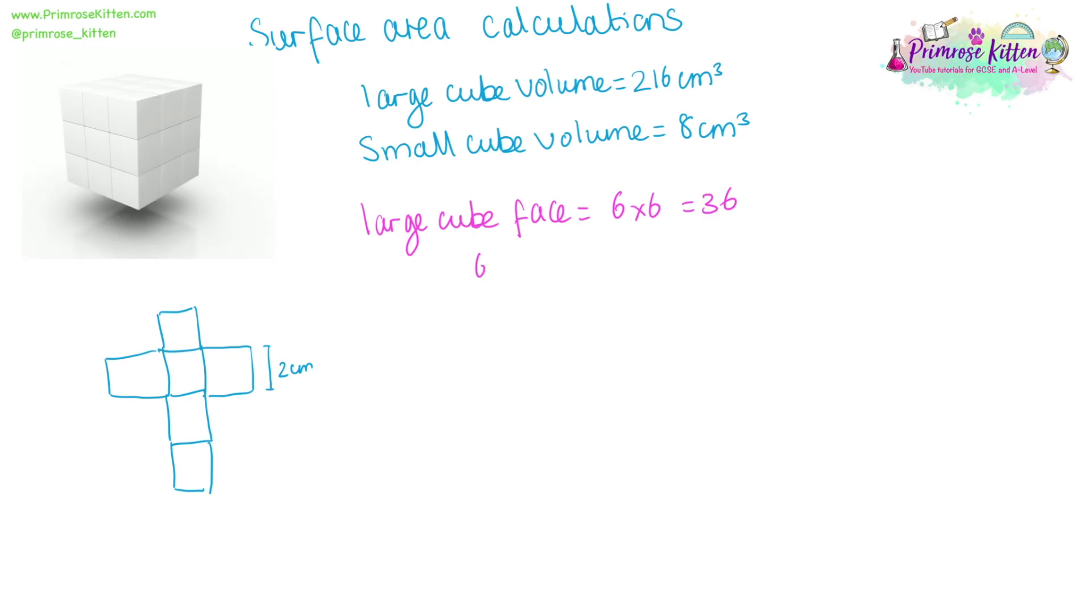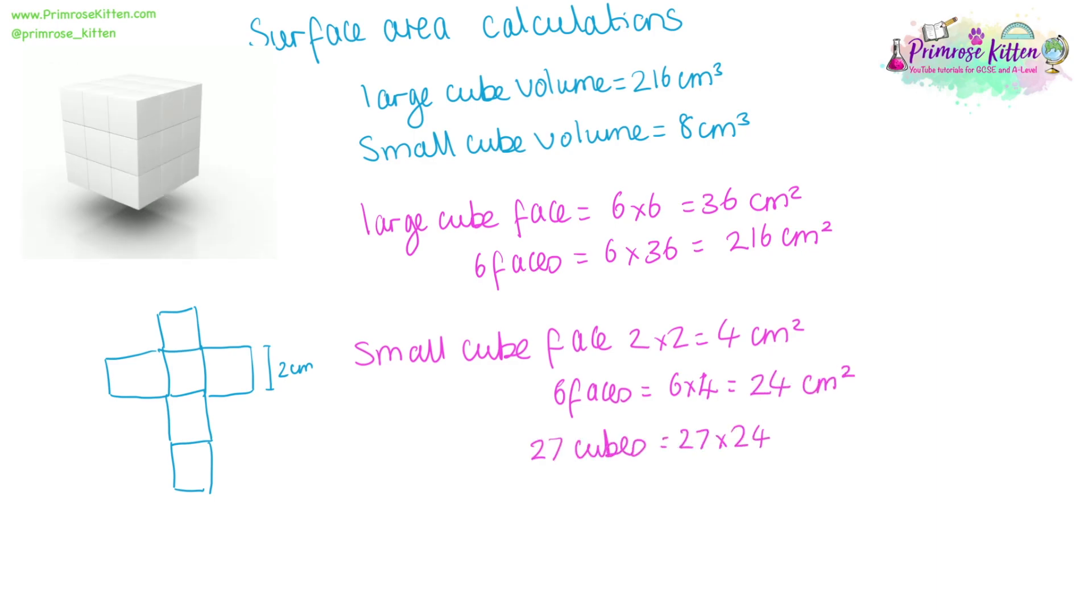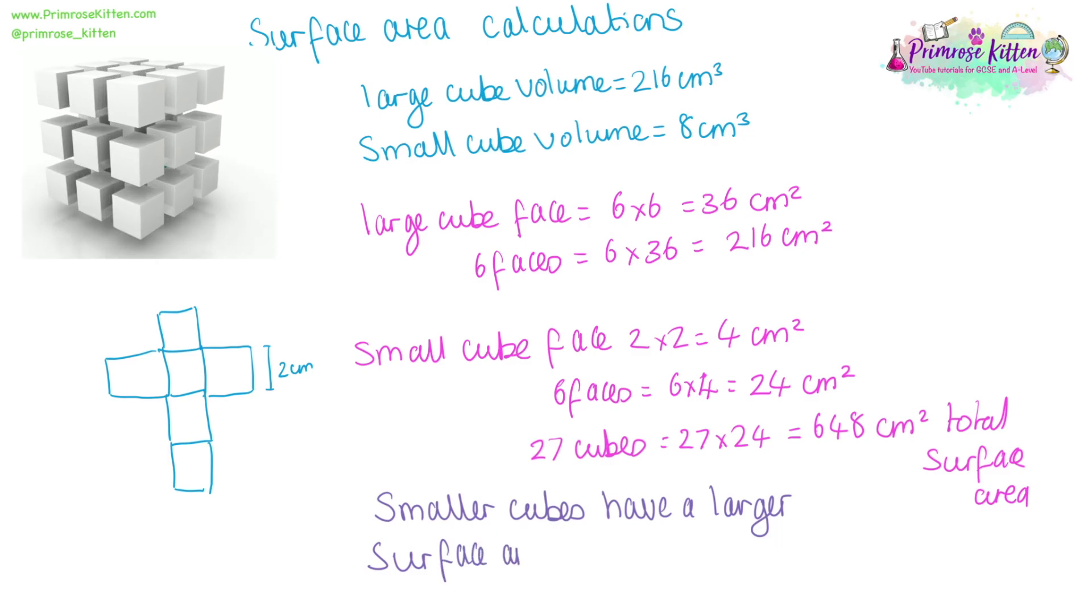The large cube, a single face is going to be six times six, that's 36 centimetres squared. But we have six faces, so six times 36 will give us 216 centimetres squared. One single face of a small cube is two times two, that is four centimetres squared. And remember, we have six faces, so six times four is 24 centimetres squared. If we look at the surface area of all 27 cubes, 27 times 24 gives us 648 centimetres squared, as the total surface area for all of the 27 small cubes together. From this, we can say that the smaller cubes have a larger surface area for the same volume compared to the larger cube.